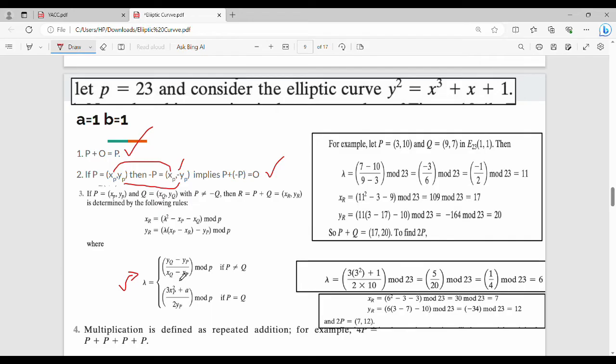When P ≠ Q with different values, the slope λ = (y₂ - y₁)/(x₂ - x₁), which is (yQ - yₚ)/(xQ - xₚ). When P = Q, the slope formula changes.